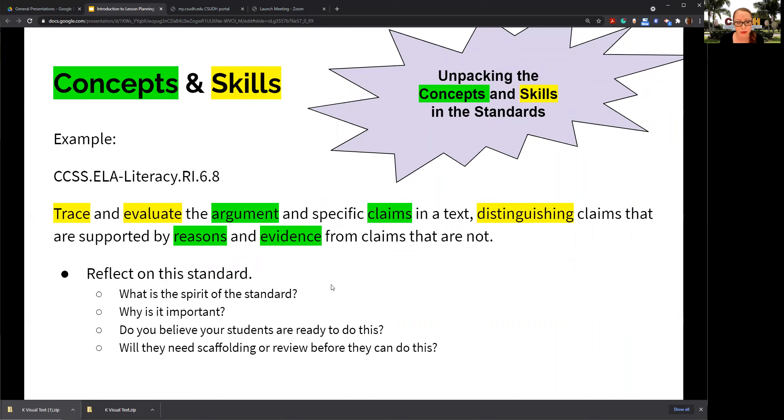The way to do that is start with the standard itself and unpack it. Some teachers think that unpacking the standards is controversial because it makes it too formulaic. So I'm going to argue that we do both. We unpack it, but we also want to look at the standard holistically. We have these concepts and skills. I've taken a standard from sixth grade language arts, and I've identified what I believe are the concepts and highlighted them in green. Then I've highlighted the skills in yellow. If you need to, you can pause it and take a look at these and think about it for a moment.